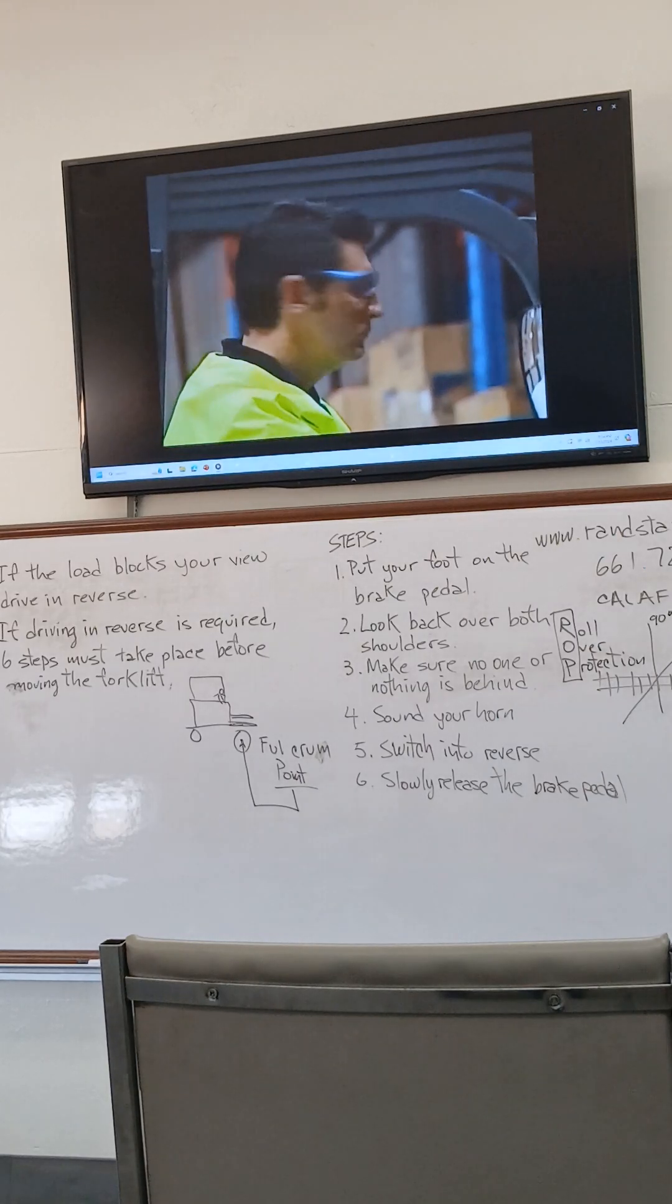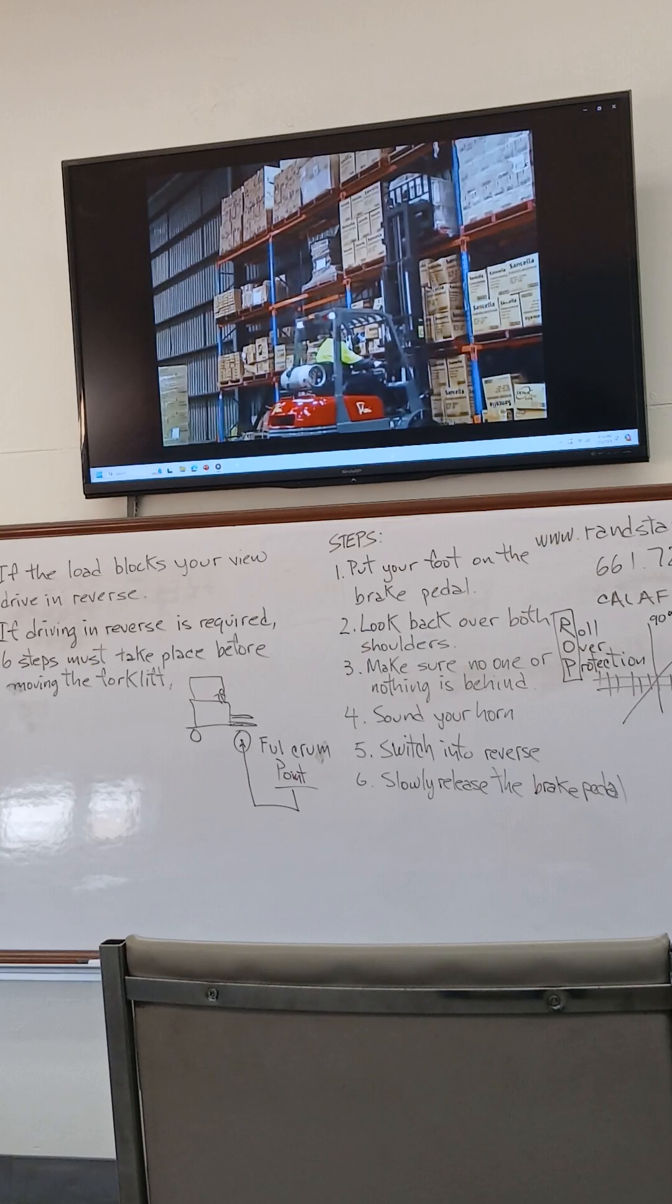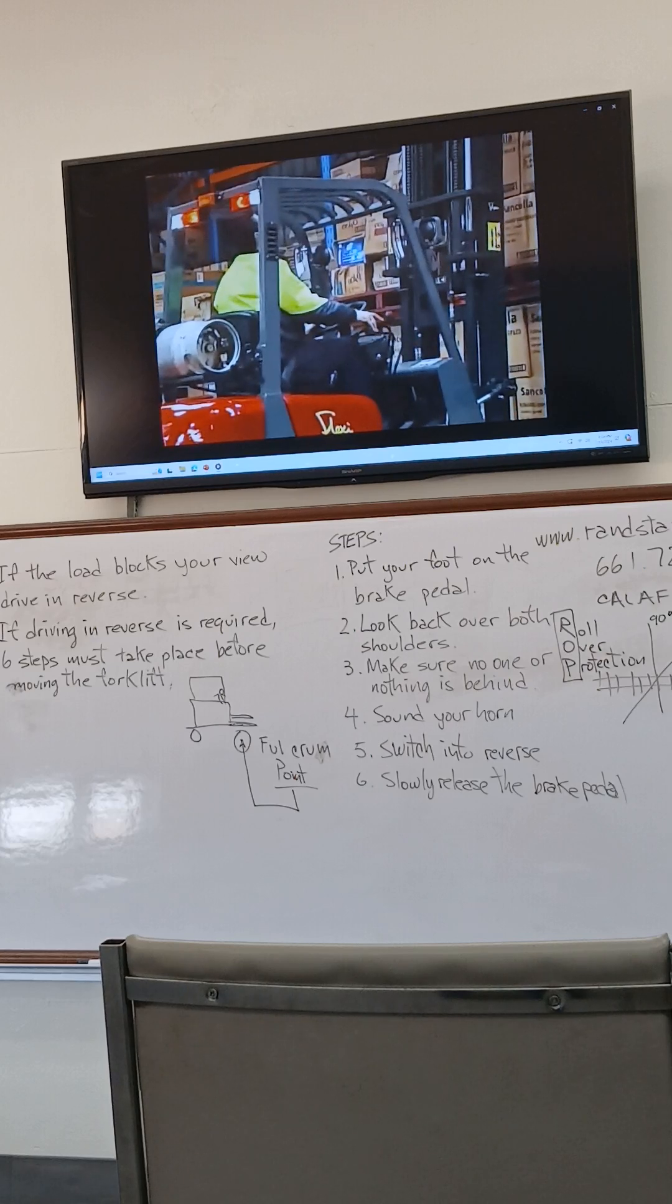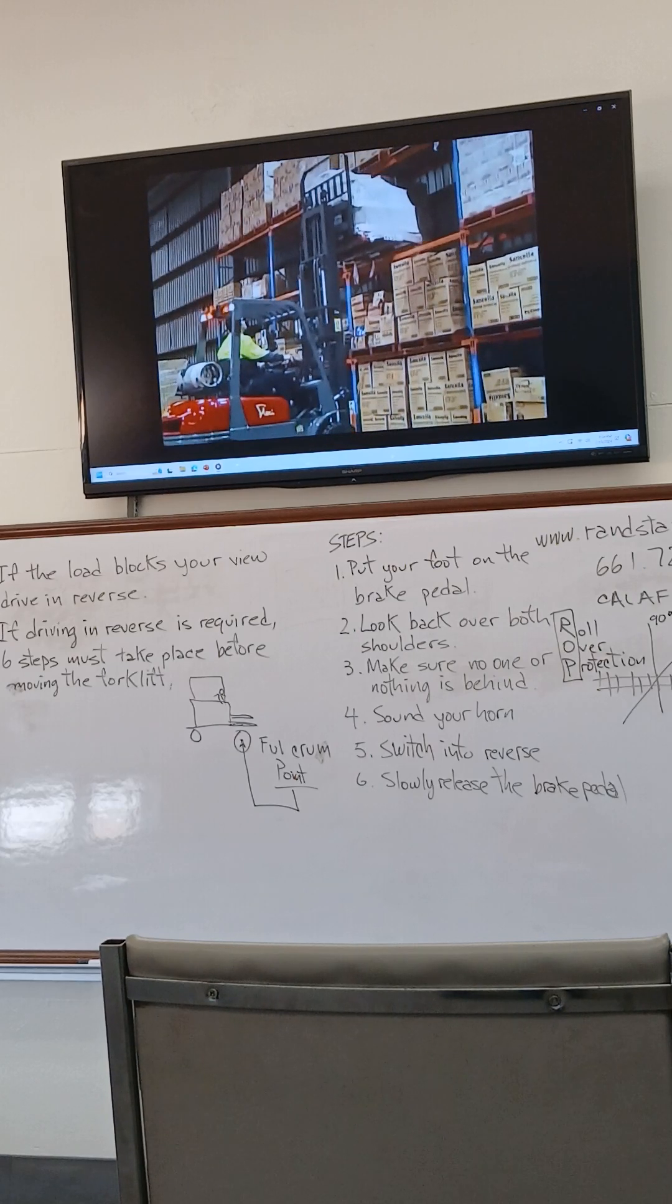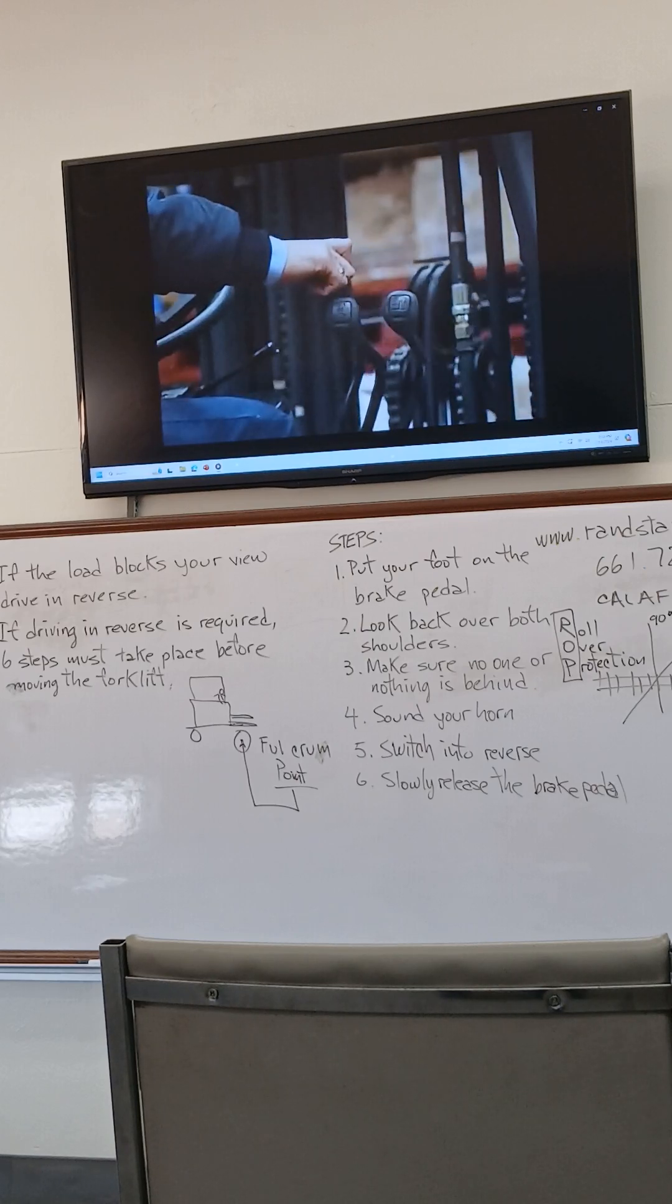Before reversing, look over both shoulders to check there are no pedestrians behind you. Reverse backwards, clear of racking, and then tilt the mast backwards slightly to stabilize the load. Lower the load and further adjust back tilt for stability.